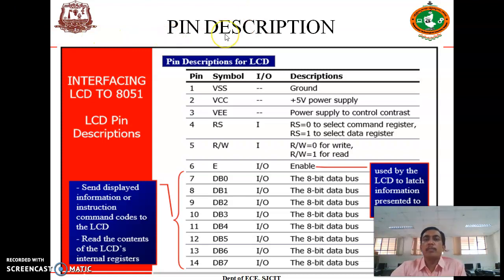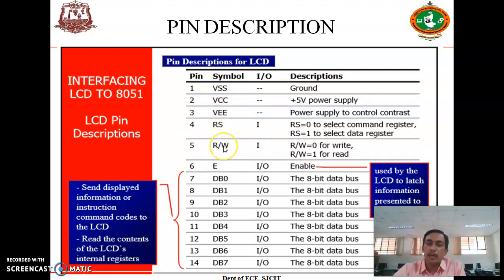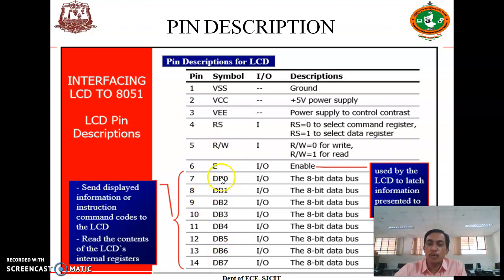When interfacing the 8051 microcontroller with an LCD to display any message, you must know the commands properly — that is very important whether writing the program in assembly language or in C. The important pin descriptions you must know are the RS pin, the RW (read/write) pin, and the enable pin. These three are the control pins. The remaining 8 pins, DB0 to DB7, are the data pins connected to the output port of the 8051 microcontroller.